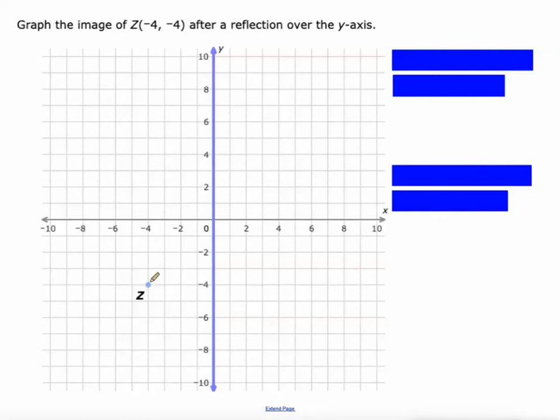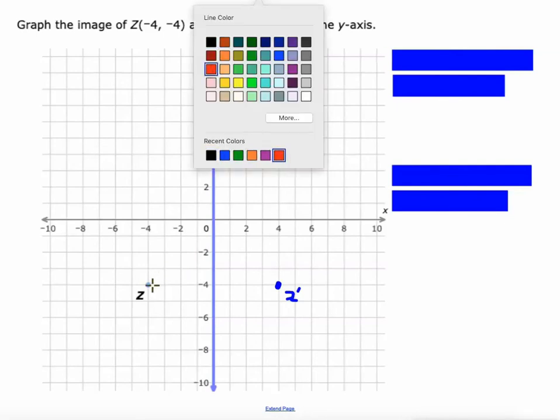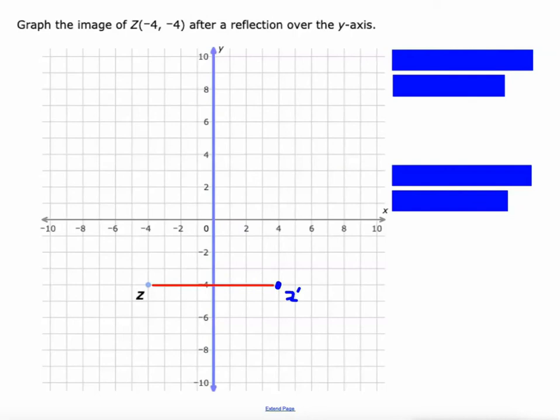In one of my last videos, we talked about rules of reflection over the x and y axis. So point Z is currently four units to the left of the y-axis, we would want to make it four units to the right of the y-axis. Remember that when you connect those points, the original image to its new image, you get a line that's cut perfectly in half by the line of reflection and it meets the line of reflection at a 90 degree angle.